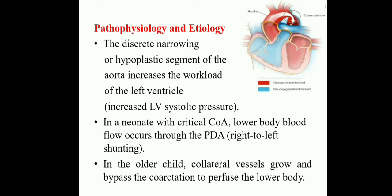In neonates with critical coarctation, lower body blood flow occurs through the patent ductus, which may result in a right to left shunt. A right to left shunt means the baby is suffering with cyanosis; in a left to right shunt there is no cyanosis — remember that. In older children, collateral vessels grow and bypass the coarctation to perfuse the lower body. The main symptom in coarctation of aorta is decreased blood circulation or decreased blood pressure in the lower extremities, and increased blood pressure in the upper extremities.